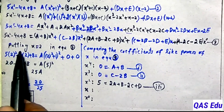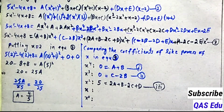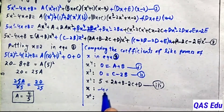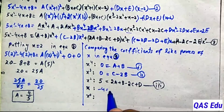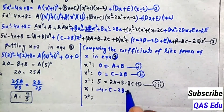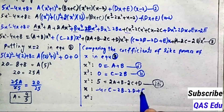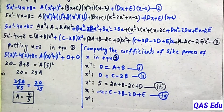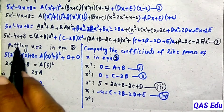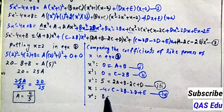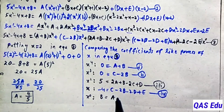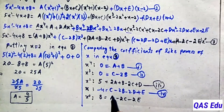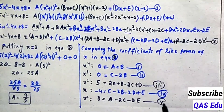For the x coefficient: left hand side is minus 4, right hand side is C minus 2B minus 2D plus E — that is equation number 4. For x to the power 0 (constant term): left hand side is 8, right hand side is A minus 2C minus 2E — that is equation number 5.